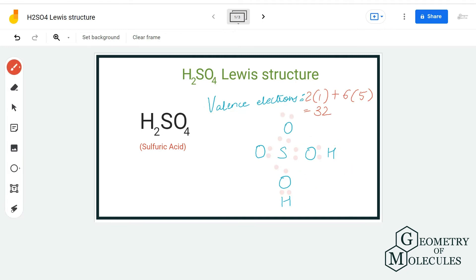Now if I place six valence electrons around this oxygen atom, four around this, four around this, and six around this, I will be using up all 32 valence electrons. But this might seem as a correct Lewis structure for H2SO4 because we have used up all valence electrons.